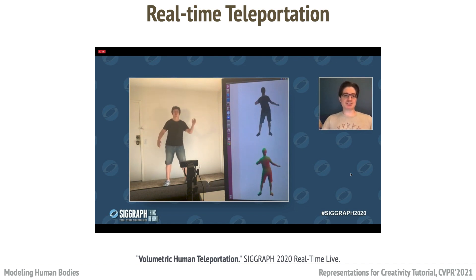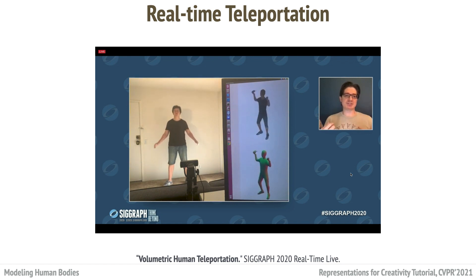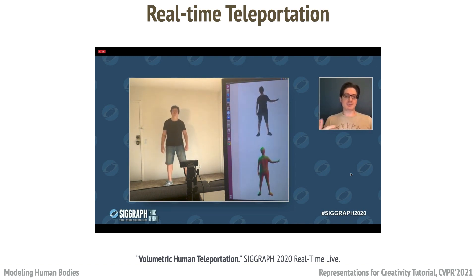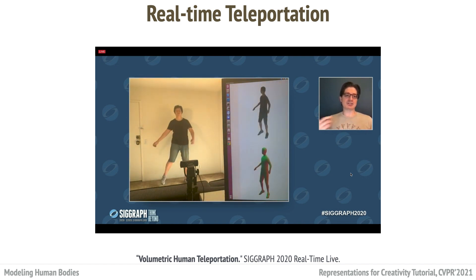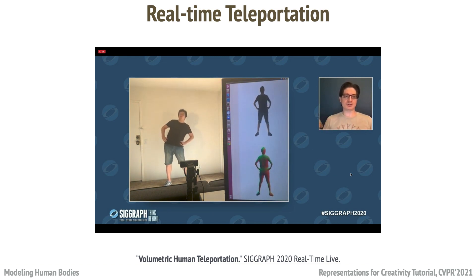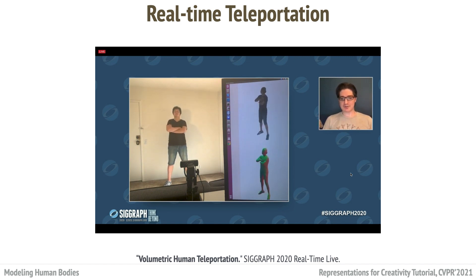This is built on work from last year called PIFu, which creates an implicit representation of a person that can then be rendered and reconstructed. Unfortunately, the volumetric reconstruction was too slow for real-time environments. This year, we accelerated the process using accelerated octree-based rendering and reconstruction algorithms, as well as new training techniques that make the system more robust to a variety of users, shapes, appearances, and all the different variations seen in real performance capture.